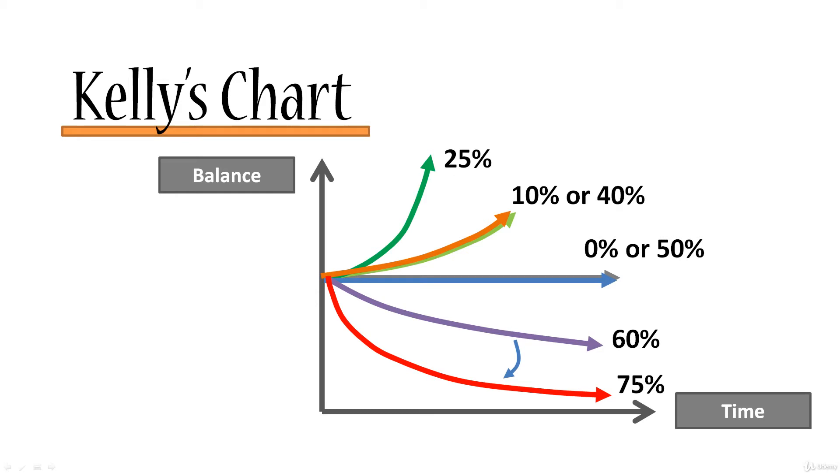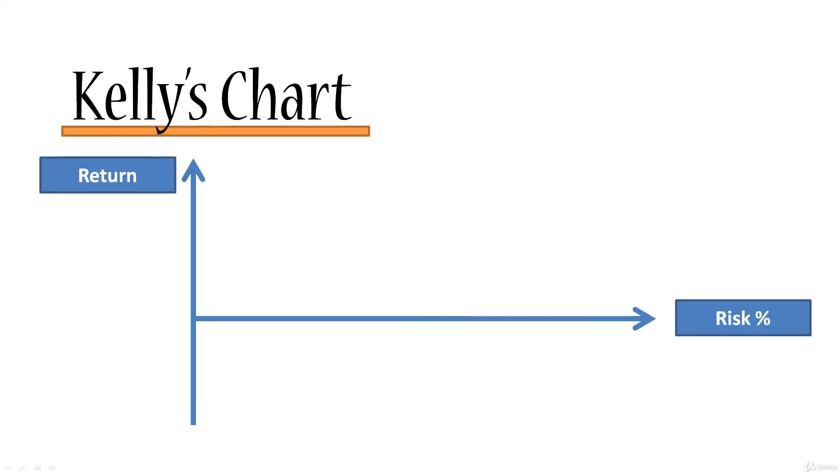Let's plot all of this on a different chart. We'll take these outcomes and plot them on a chart where on the vertical axis we have return in the long run, and on the horizontal axis, instead of time, we have the risk percentage. When we bet 0%, our return is 0.